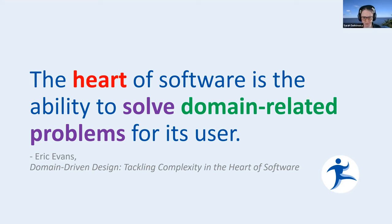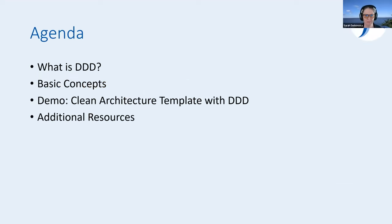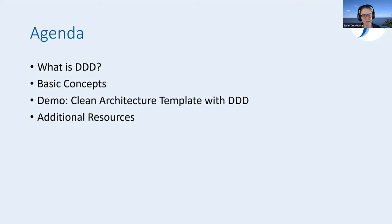We're going to be looking at domain-related problems, also known as the business's problems. We'll talk about what is DDD and give some basic concepts, because not all of you work with DDD every day — some of you are very new to it, some have been working with it for years. Then I'm going to show the clean architecture template. Our Dallas — Steve Smith — is the one who maintains it with a bunch of us here at Nimble Pros.